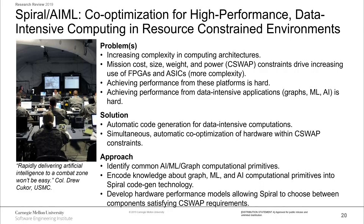This is our problem-solution approach. Data-intensive computing stresses hardware architectures in a way that makes it very difficult to get performance out of these systems. Cost, size, weight, and power constraints in mission applications put stress on the hardware you can choose, leading to more adoption of FPGAs and ASICs, making these hardware systems even more complex and the programming problem even more difficult. We are striving to achieve code generation that can also inform us as to the hardware components we should choose to achieve the C-SWaP constraints that missions require.